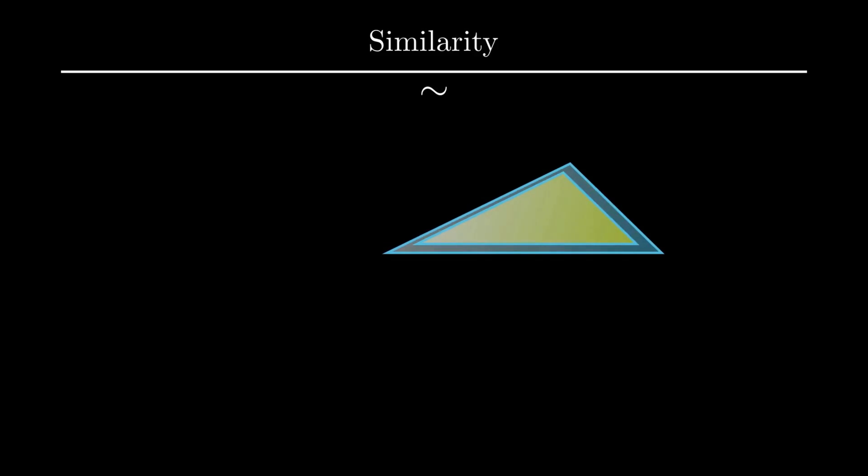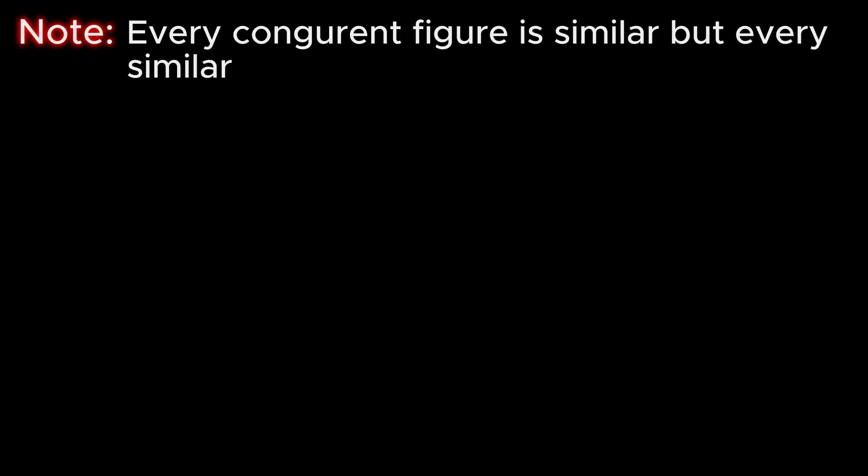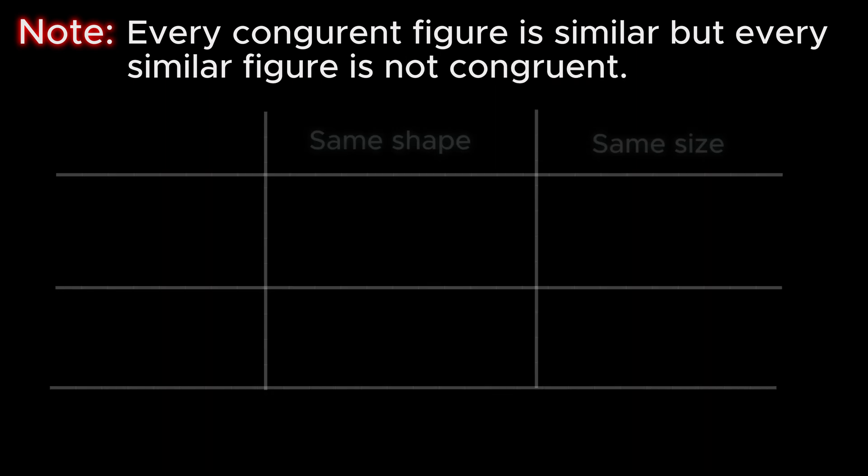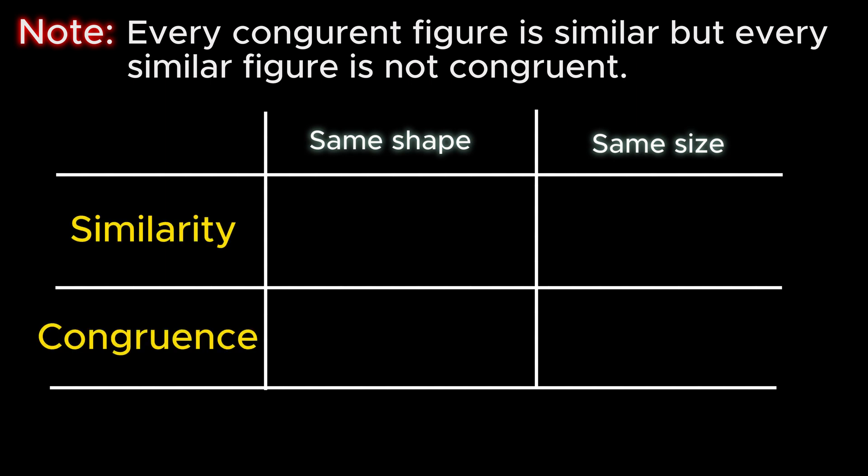Though it may be noted that every congruent figure is similar but every similar figure is not congruent. The truth of this statement lies in the fact that for figures to be similar, it requires only same shape, whereas size may vary.